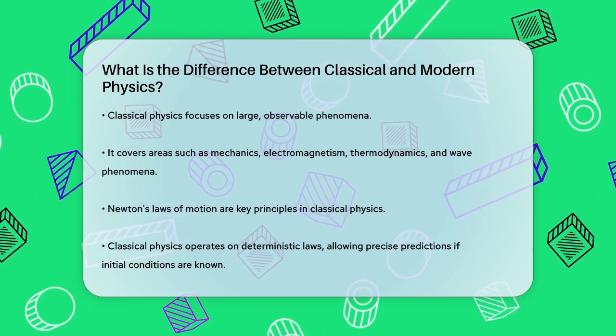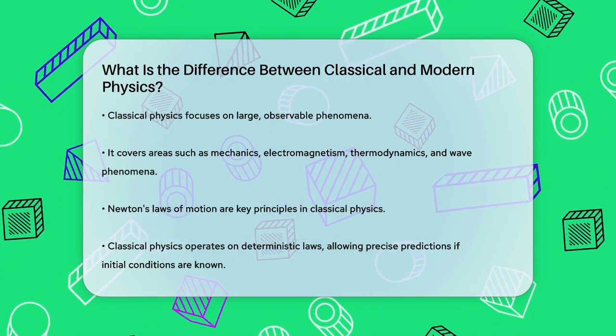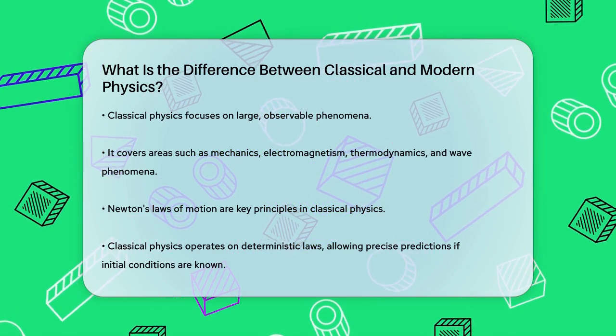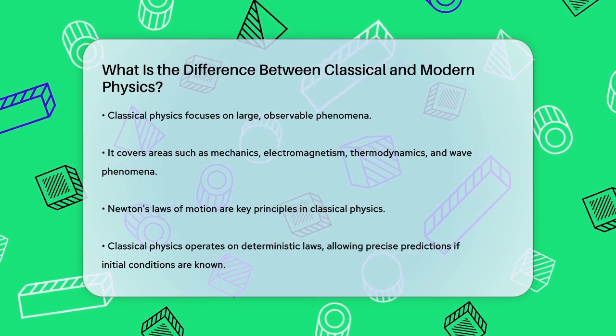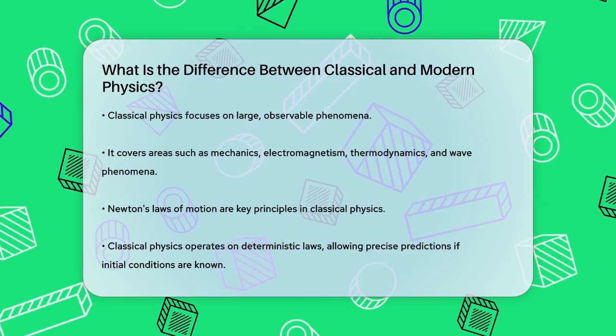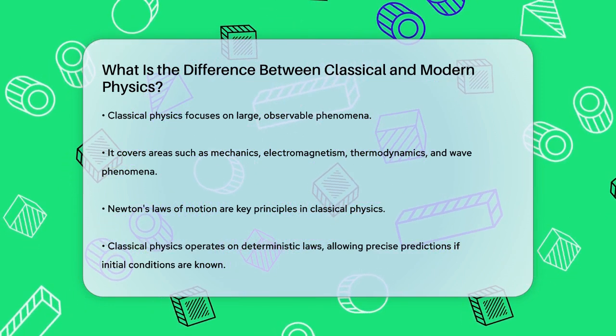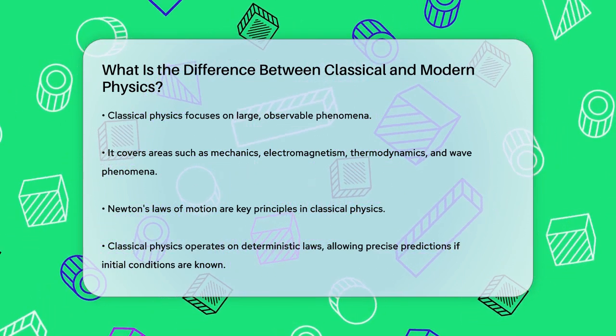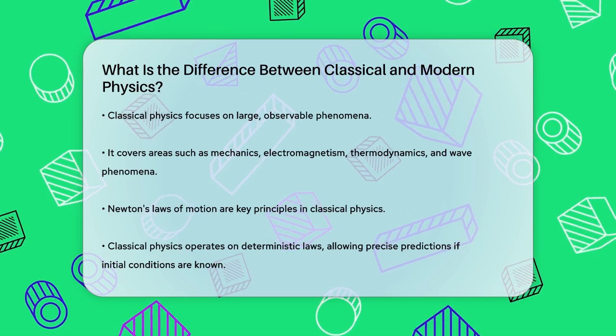Classical physics is all about the big things we can see and touch. It deals with the motion of objects, forces, and energy on a scale that we can observe with our naked eyes. This branch of physics includes mechanics, electromagnetism, thermodynamics, and wave phenomena.